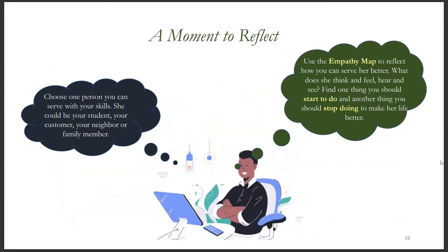Let's take a few moments to reflect on the following questions. Choose one person you can serve with your skills — she could be your student, your customer, your neighbor, or family member. Use the empathy map to reflect on how you can serve her better. What does she think and feel, hear, and see? What are her fears, needs, and problems? Find one thing you should start doing and another thing you should stop doing to make her life better.